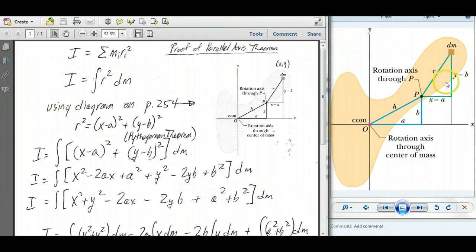And we also see over here that r squared is equal to, right here, this equation, quantity x minus a squared plus quantity y minus b squared. So I'm going to take this equation here, and I'm going to substitute for the r here, the x minus a squared plus y minus b squared. Substitute it in there.